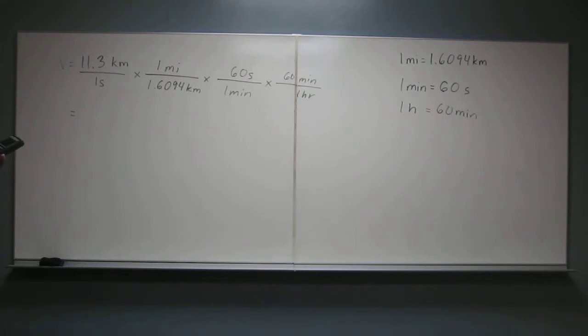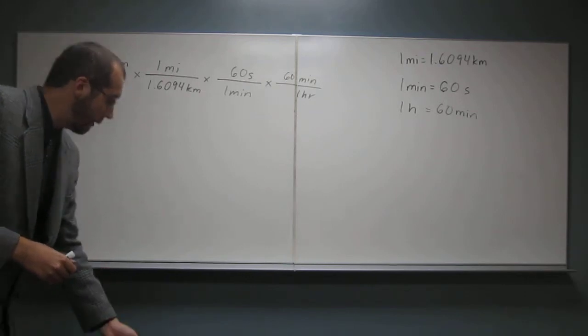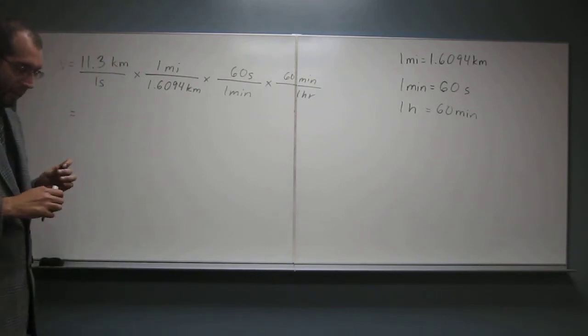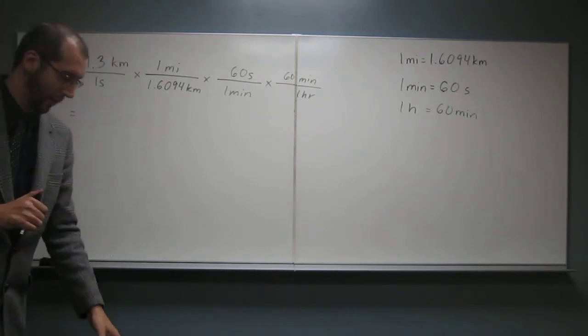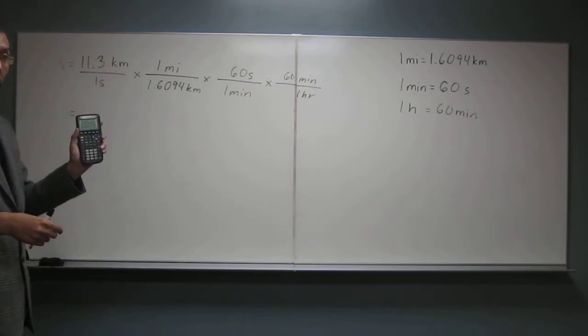11.3 times 60 times 60 and then divide that by 1.6094. Okay, so how many sig figs is this going to be? Three. To three, okay, so this number is really big.